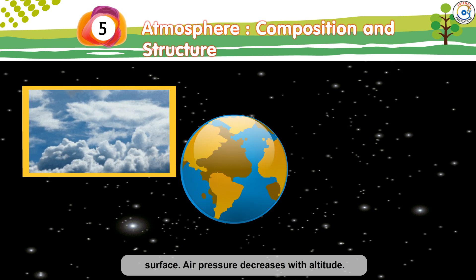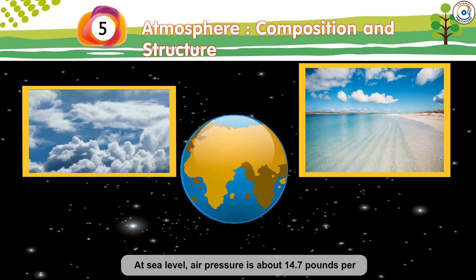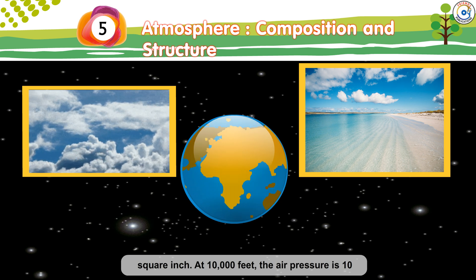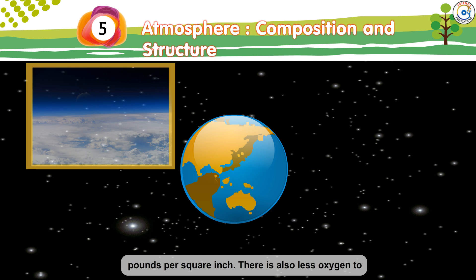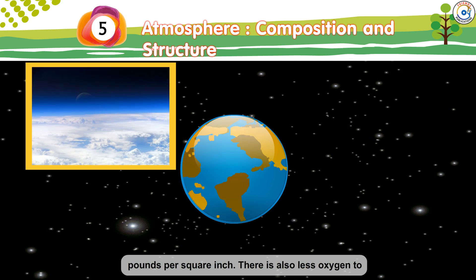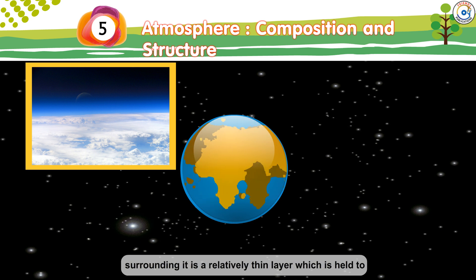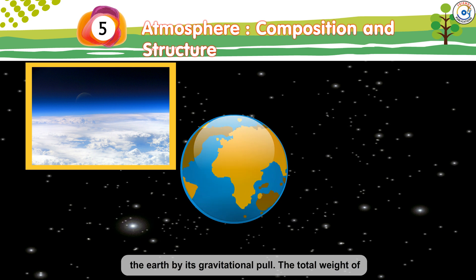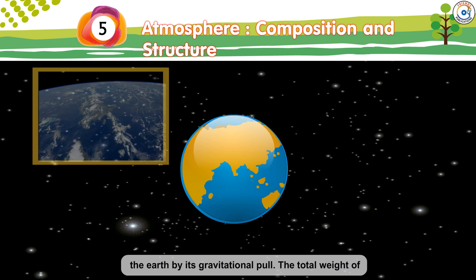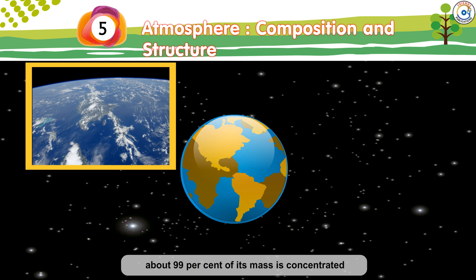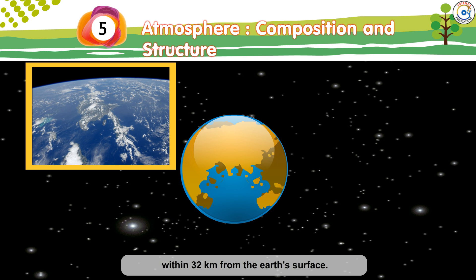Air pressure decreases with altitude. At sea level, air pressure is about 14.7 pounds per square inch. At 10,000 feet, the air pressure is 10 pounds per square inch. There is also less oxygen to breathe as we go higher up. Considering the size of the Earth, the atmosphere surrounding it is a relatively thin layer held to the Earth by its gravitational pull. The total weight of Earth's atmosphere is about 500 million tons, and about 99% of its mass is concentrated within 32 kilometers from the Earth's surface.